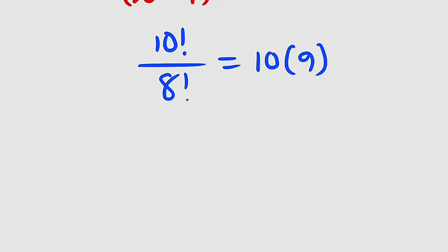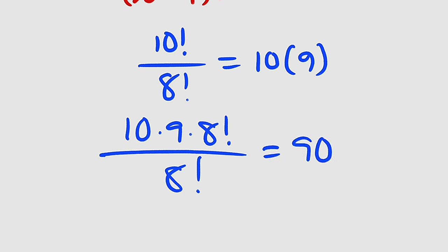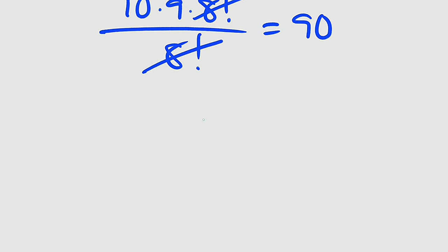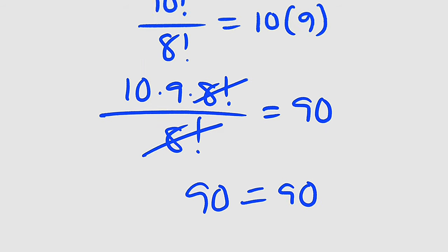We can split this into 10 times 9 times 8! divided by 8!. This is equal to 90 because 10 times 9 is 90. This cancels this, we have 10 times 9 which is 90. Since 90 equals 90, it implies that x equal to 9 is a valid solution.